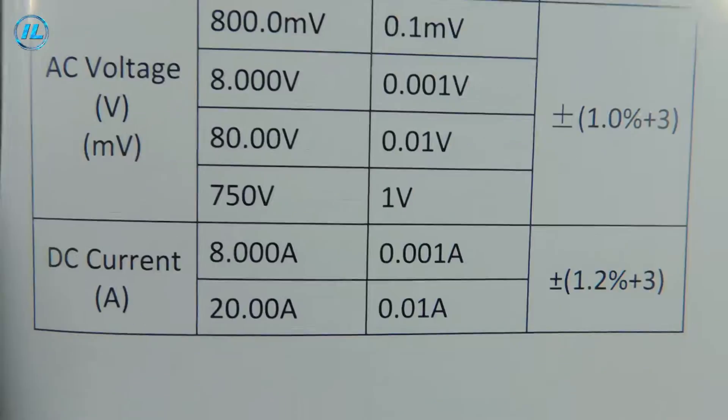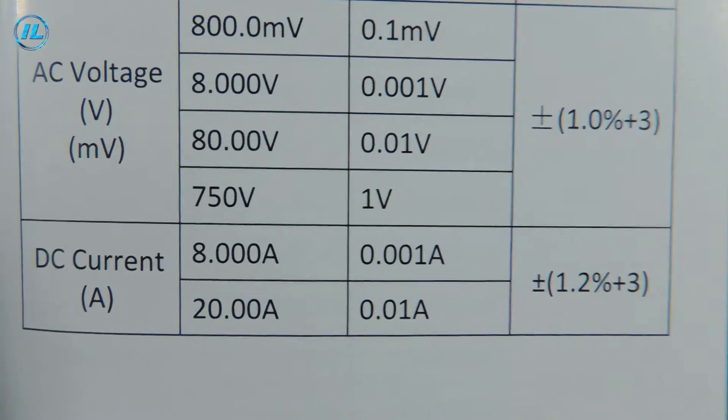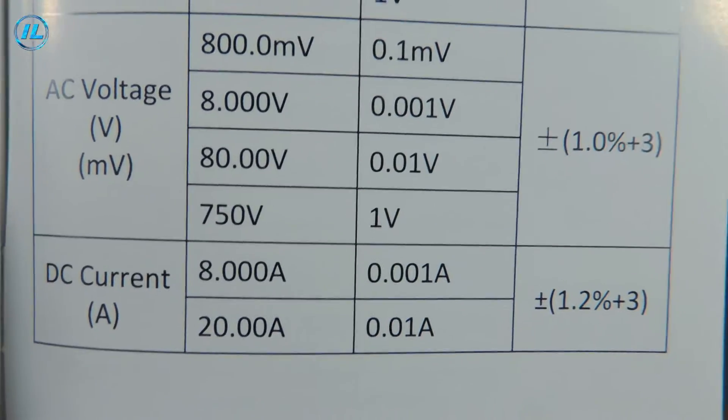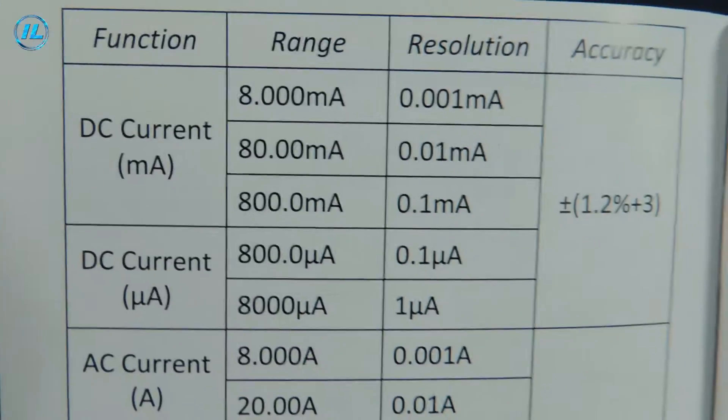Measurement of AC voltage up to 750 volts. The margin of error is slightly more than 1%. Measuring direct current up to 20 amperes and an error of 1.2%.